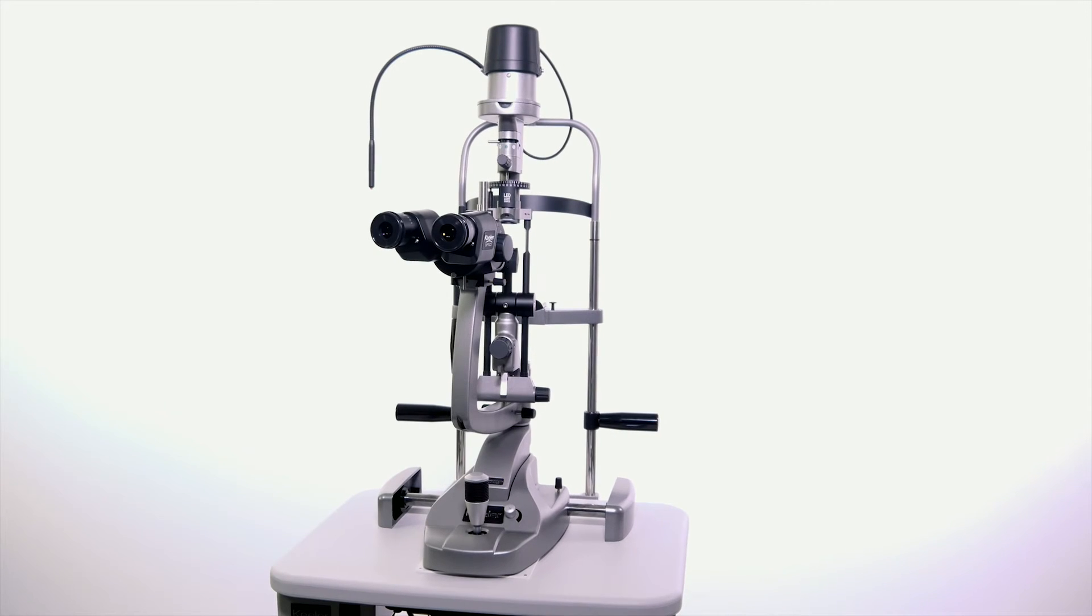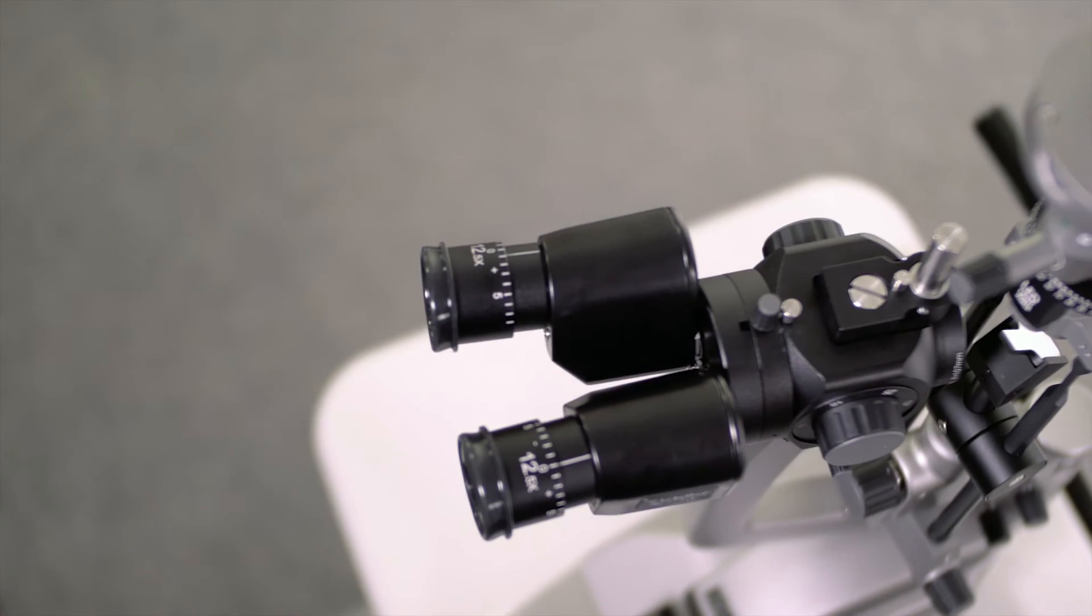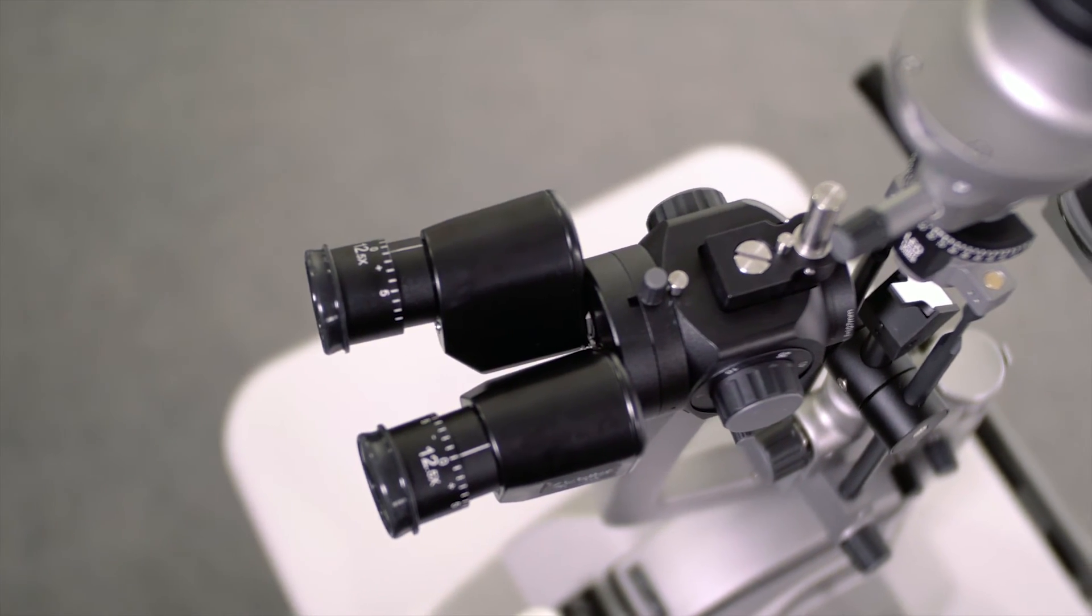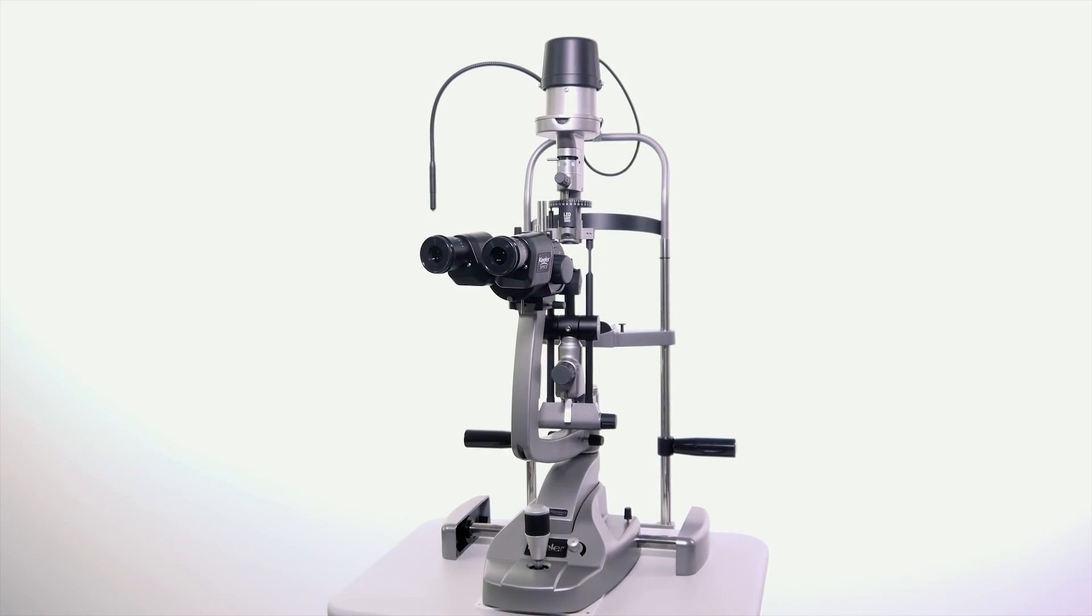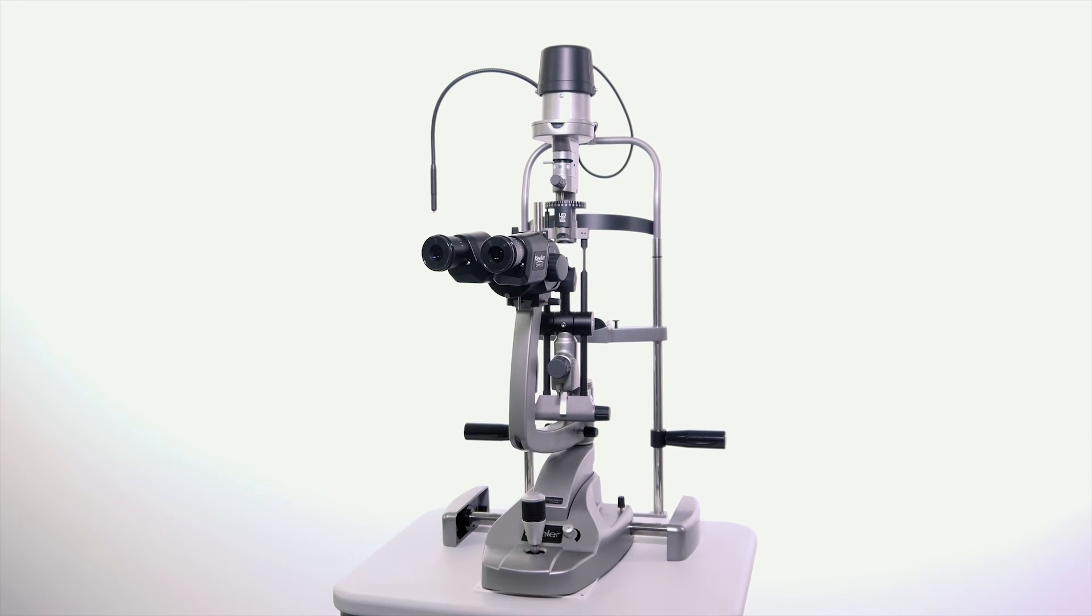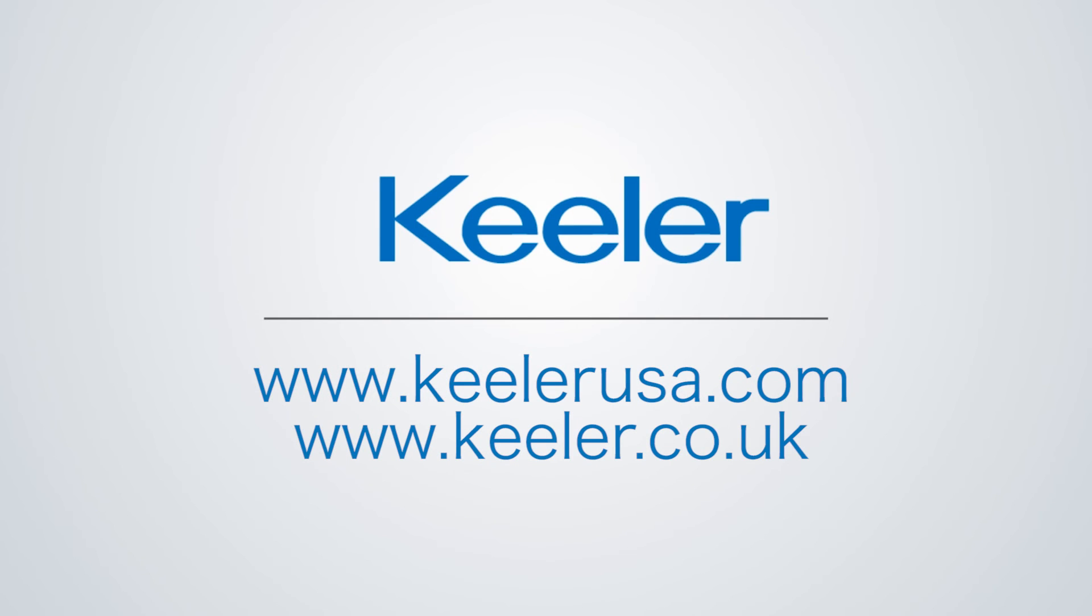The K-Series is our tower illumination slit lamp. It features a full range of features and K-Series exceptional optics. This product also comes in a digital-ready form that offers the same features but can seamlessly be upgraded to a full digital system. For more information about this product or other Keeler products, please visit our website.